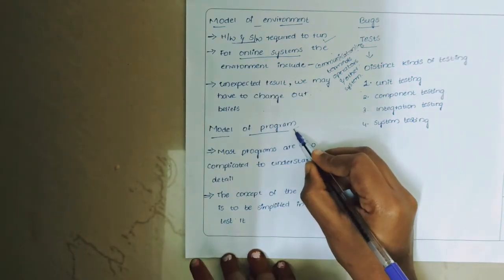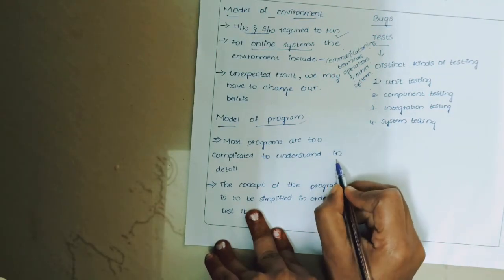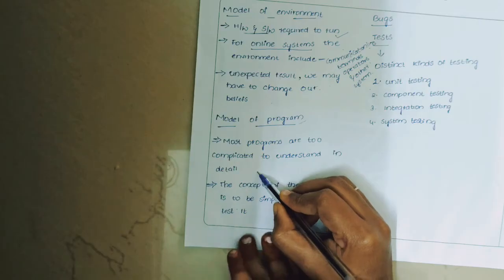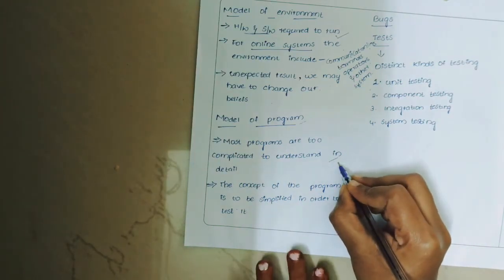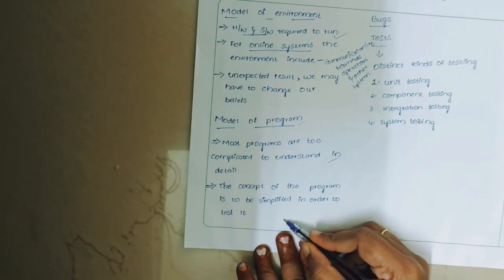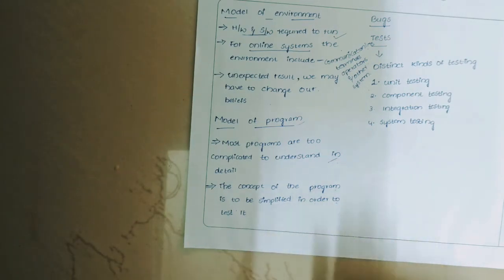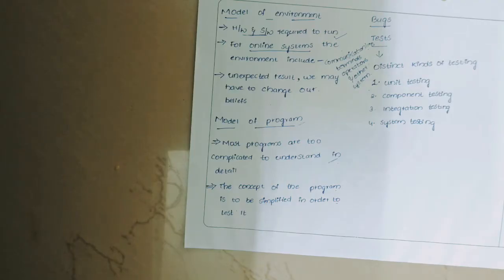Regarding the model of the program: most programs are too complicated to understand in detail. If the program is more complicated, we may have difficulty understanding it. The concept of the program must be simplified in order to test it — whatever we have written in the program must be simplified to determine whether the results from testing are expected or unexpected.